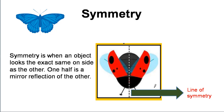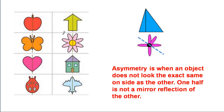Symmetry is when an object looks the exact same on one side as the other. One half is a mirror reflection of the other. Look at this line here — this is called the line of symmetry. Look at the picture on the left. These pictures are symmetrical. The left side is exactly the same as the right side.